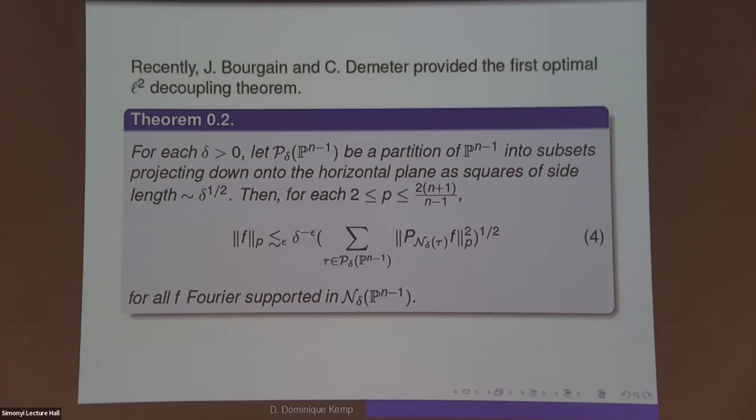We can say that delta to the one half is a reciprocal of an integer. The key point is that all your subsets downstairs that correspond to subsets in the actual graph, they all look square-like. They all are roughly the same, just maybe rotated and translated.